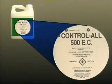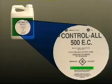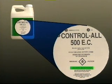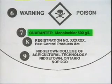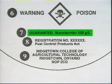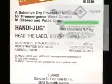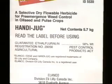The guarantee tells you the name of the chemical that is the active ingredient in the product. The active ingredient is the part of the pesticide product that controls the pest. The guarantee also shows the concentration, or how much of the chemical is in the product. This can be measured by weight per unit of volume. This label shows that the active ingredient is the chemical monolachlor and that there are 500 grams of the chemical in each liter of this pesticide product. The concentration can also be measured as a percentage by weight — for example, a guarantee of 50% means that in each 100 parts of pesticide, 50 parts are active ingredient.